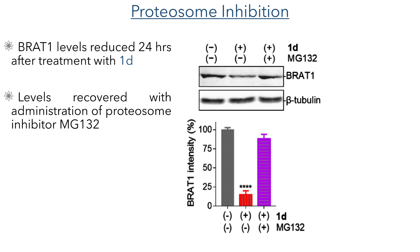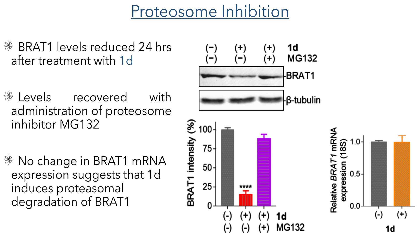To elucidate how the curcuzones reduced the level of BRAT1 in the cell, the authors carried out an experiment involving proteasome inhibition. They treated cells with compound 1D and after 24 hours observed a reduction in BRAT1 levels. However, when MG132, a proteasome inhibitor, was also included, the levels of BRAT1 were restored, indicating that BRAT1 undergoes proteasomal degradation when incubated with compound 1D. To confirm this mechanism, they also looked at the relative expression of BRAT1 mRNA and found no difference in expression, confirming that BRAT1 is expressed before being degraded after binding to 1D.